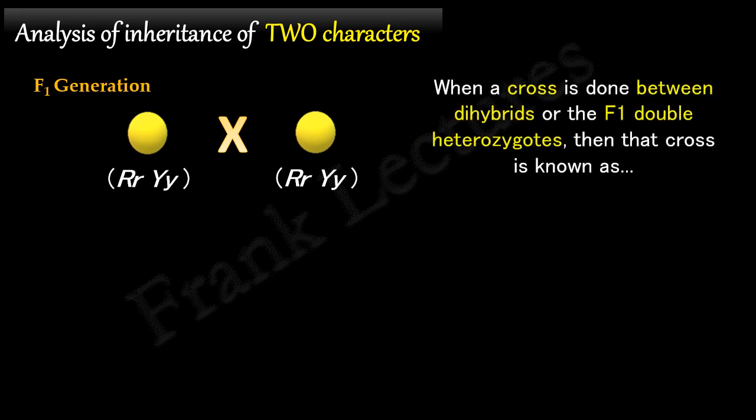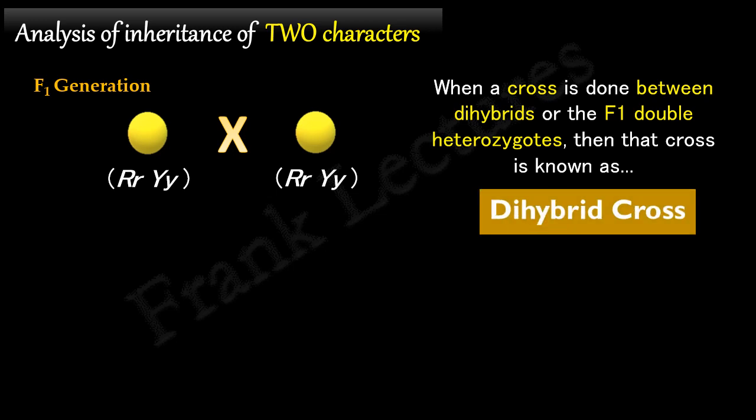When a cross is done between two dihybrids or F1 double heterozygotes, then that cross is known as a dihybrid cross. In other words, in such a cross, the two individuals are heterozygous for two characters.